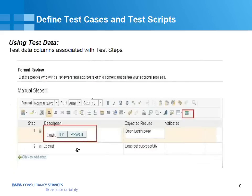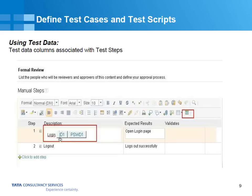Once you associate test data, there is an option to associate test data columns. For step one, I want to use ID 1 and password 1 as variables in my script, and those variables would contain different rows — different sets of data. As soon as you click on this, it provides a menu where you can select the data columns. I have selected ID and password data columns that get populated here so that at runtime when you run your test case, these variables are replaced by actual values, and on this screen you can have the test data entered and test your functionality.